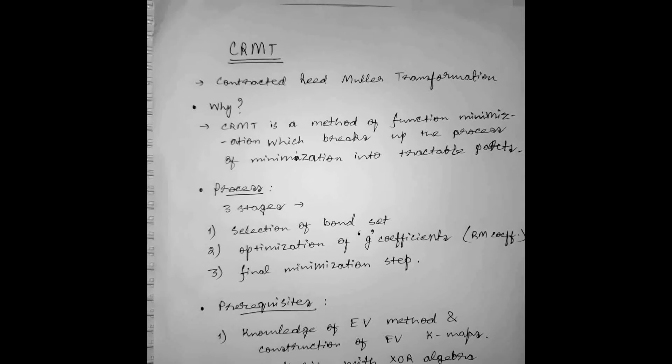So basically what is CRMT? It is a method of function minimization which breaks up the process of minimization into tractable parts. This minimization is performed with the assistance of entered variable Cardinal maps or EV K maps. This whole process is called contracted Reed Muller transformation minimization method.